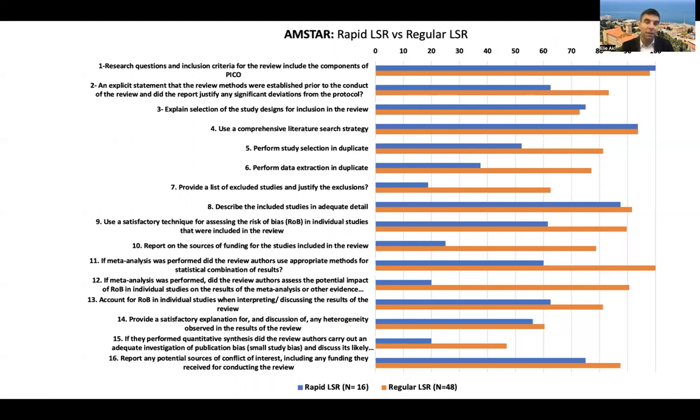This is another graph from that study that shows the quality of those systematic reviews assessed with the AMSTAR instrument, acknowledging that the AMSTAR instrument is not designed specifically for living systematic reviews. You could see that on many of those questions, the percentage of living systematic reviews that met them was not very impressive. When we stratified the results by rapid living systematic review versus non-rapid, the blue bars that represent the rapid show that you have lower quality for those living systematic reviews where they were conducted in the rapid mode.